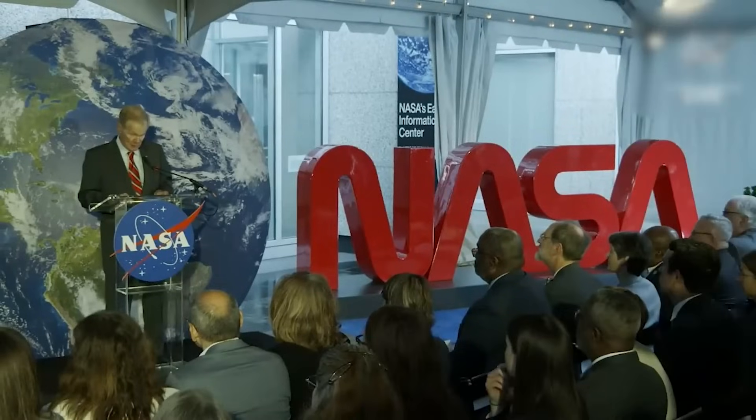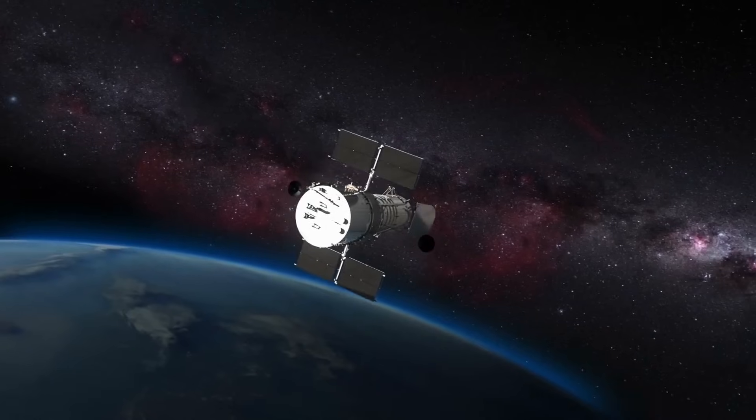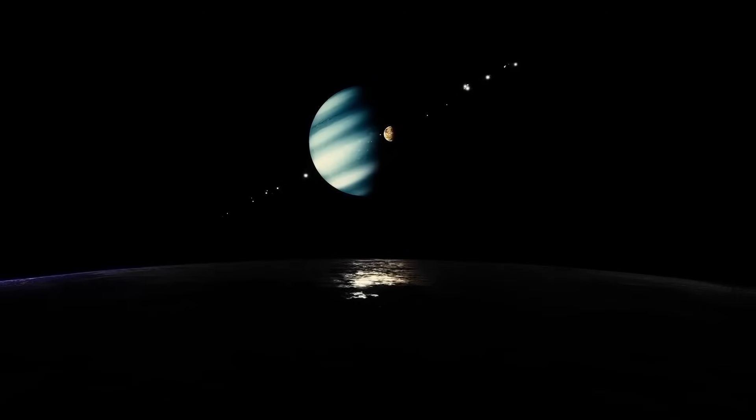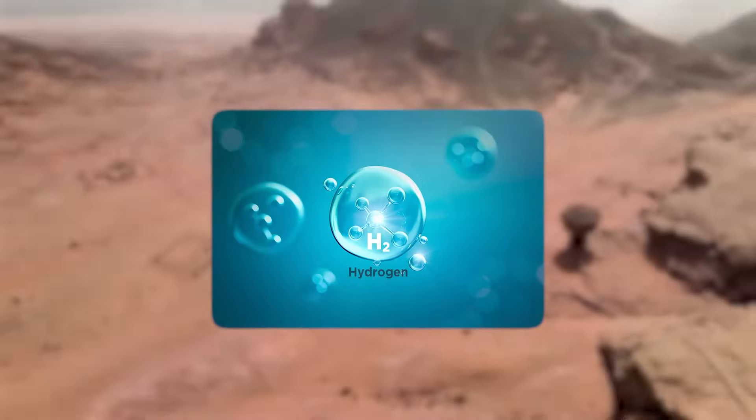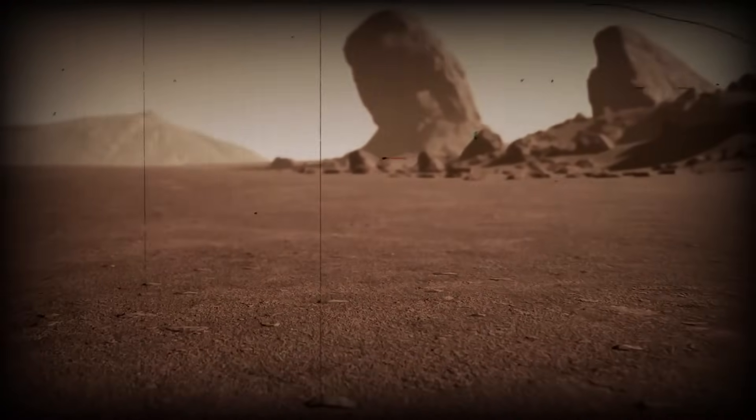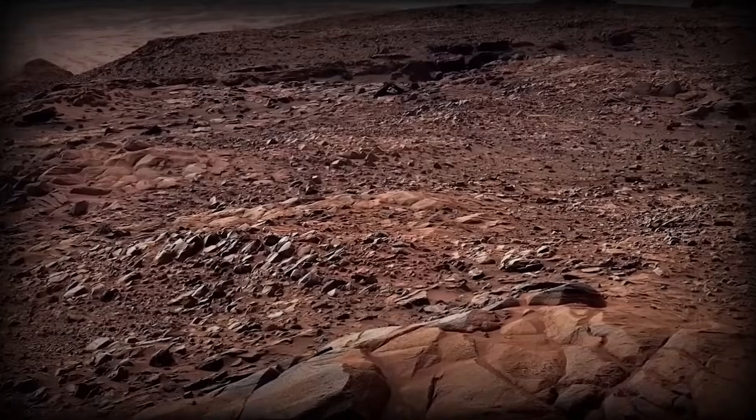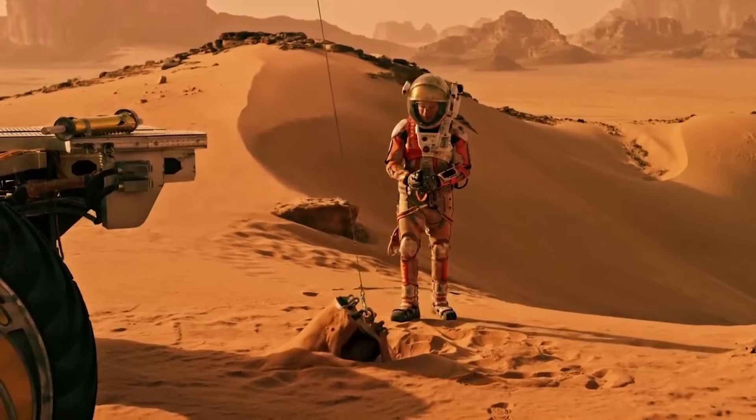NASA didn't stop at discovery. Follow-up observations using the Hubble Space Telescope suggest that at least three of the planets lack thick hydrogen-dominated atmospheres, hinting strongly at rocky terrestrial surfaces, not gas giants.